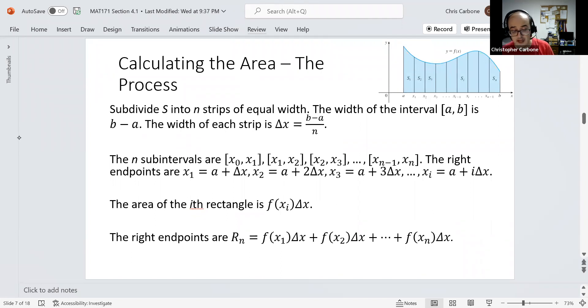In the area of the i-th rectangle, if we just choose some value for i, we could find that area as f of x sub i times delta x. And the right endpoints, then, would add up each of these values of the function at that right endpoint, so f of x sub 1, for example, times delta x, all the way down to f of x sub n times delta x.